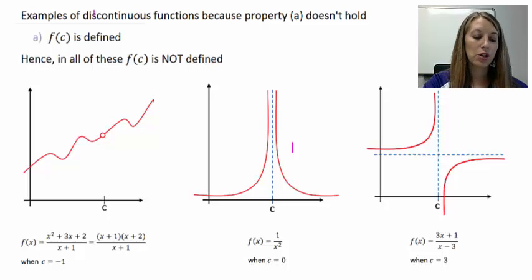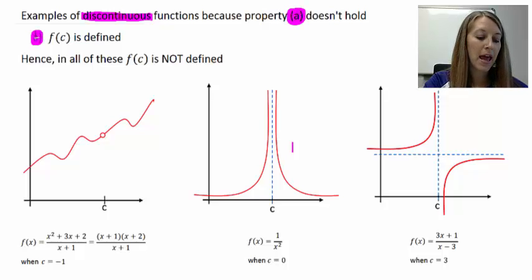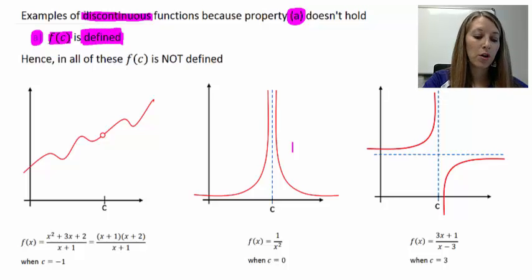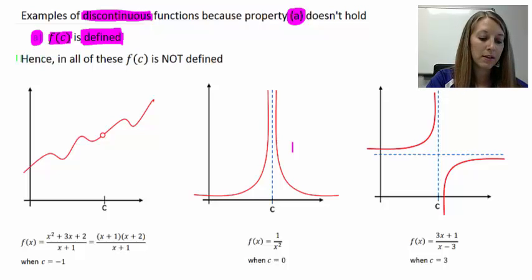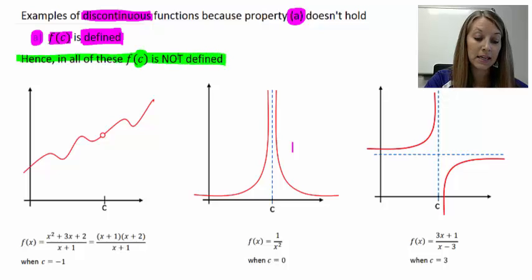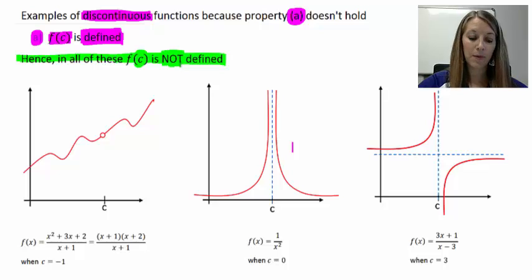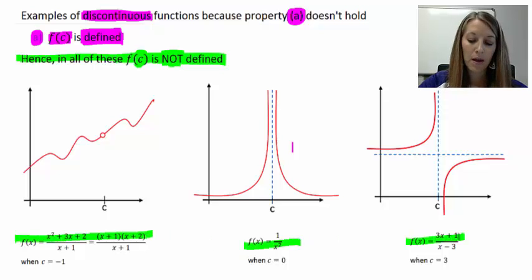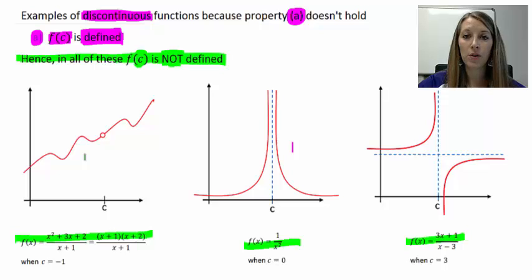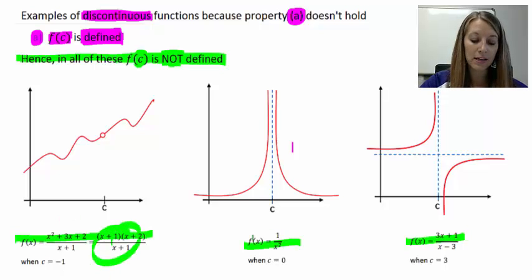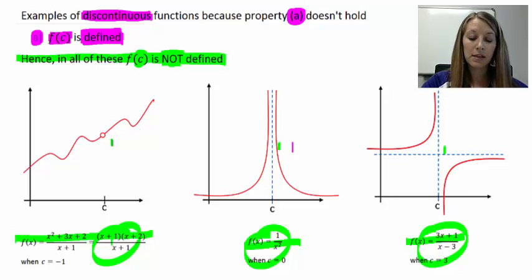This slide shows examples of discontinuous functions because property A doesn't hold. Reviewing property A: it requires that our function itself is defined — material from college algebra. If a function is discontinuous because of property A, that means f(c) is not defined at c. I've provided examples at the bottom; if you were to graph them, you would see something that mimics the three graphs shown.